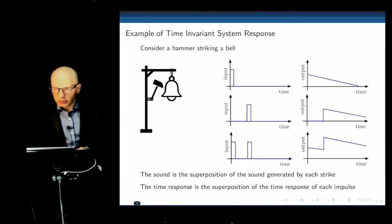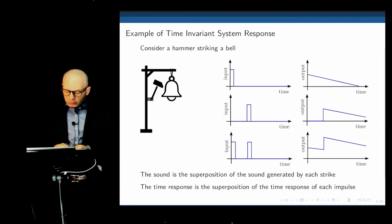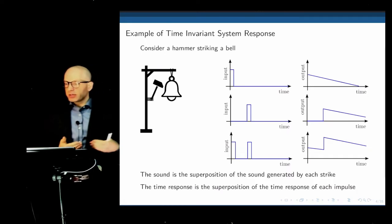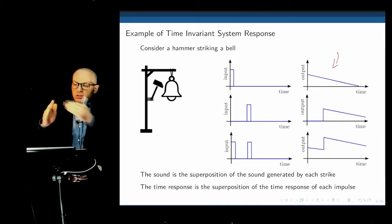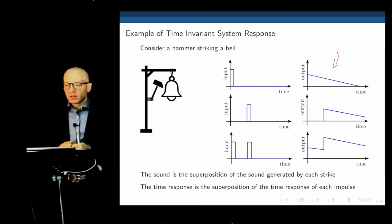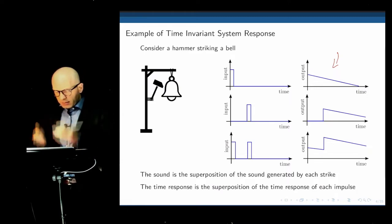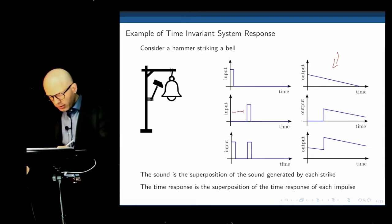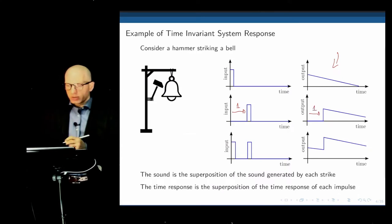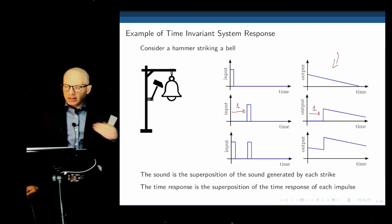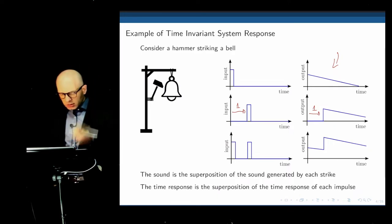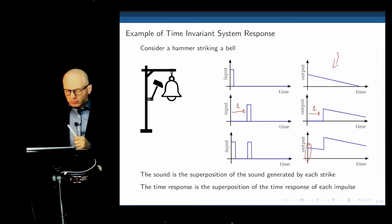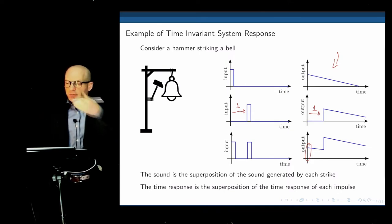Consider a hammer that strikes a bell. If we strike the bell at time zero, we see the sound produced by the bell — a response that decreases over time and eventually goes to zero. If we strike at time zero, the sound starts at time zero; if we do that one second later, the sound will be produced one second later, but follow the exact same curve. If we strike the bell twice — once at zero and once at one second — we should see the superposition of these two sounds: a peak at zero, then another peak at one second, decaying over time.